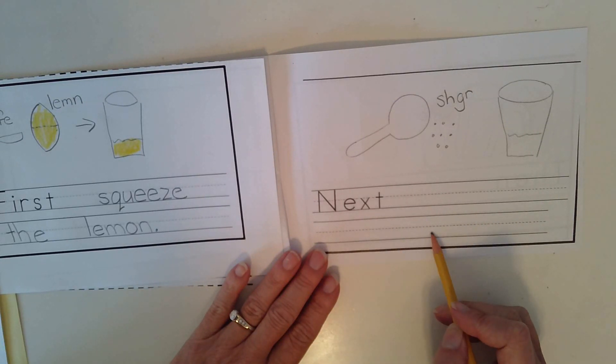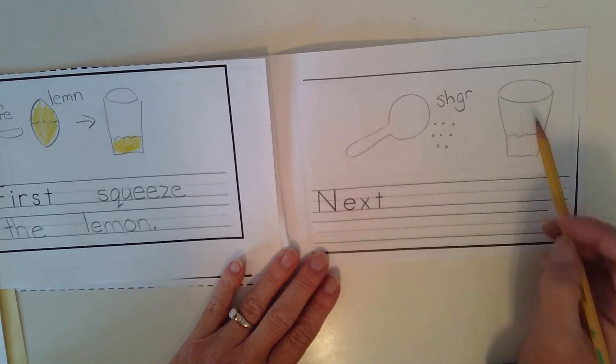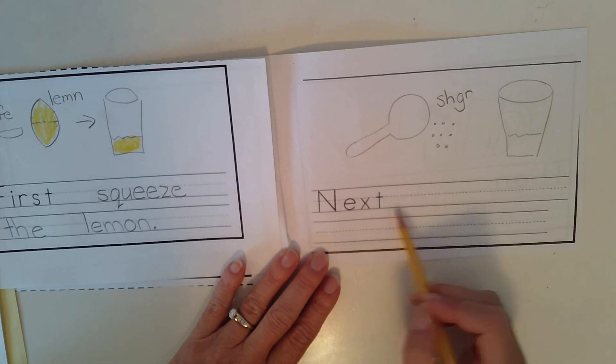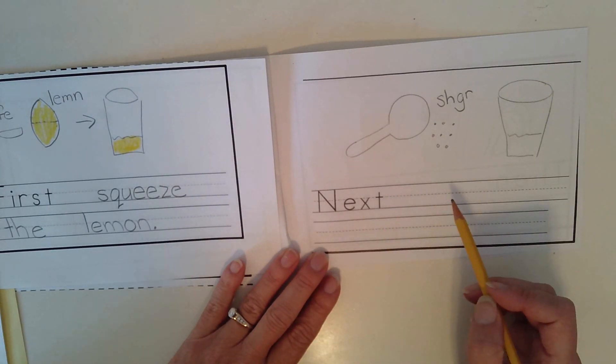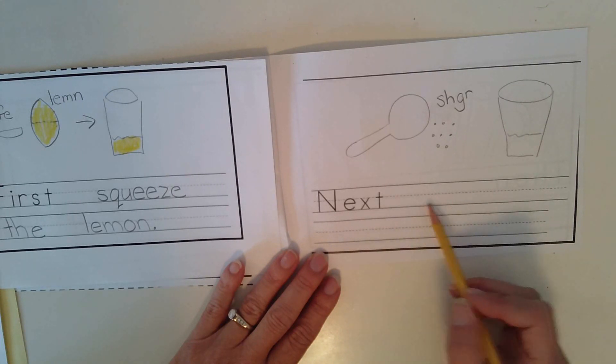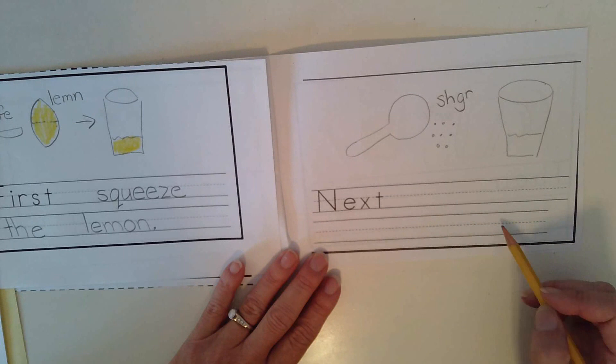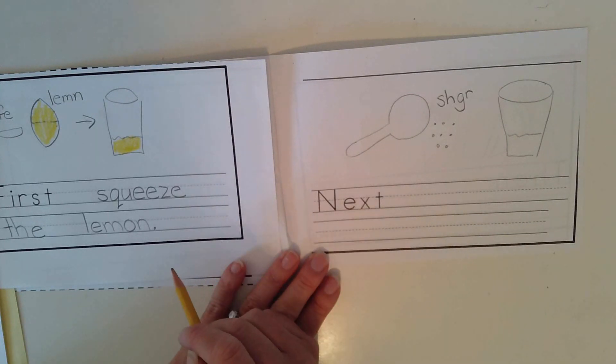Now, if you are a more advanced writer, add some more details. Next, add, and I don't know if you remember in Mrs. Stalker's video, I had to add two big spoons of sugar because it was so sour, right? Next, add two big spoons of sugar. Or maybe you like yours even sweeter and you want to add three big spoons of sugar.